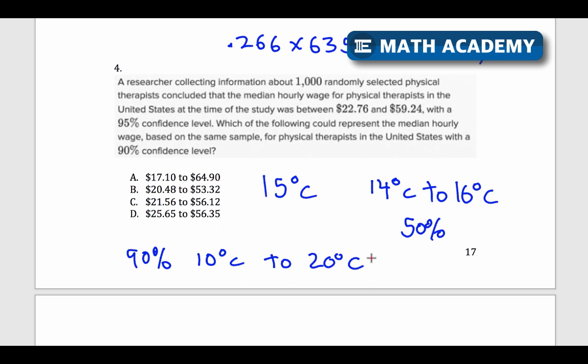That's like saying, hey, we went from 10 degrees to 20 degrees down to 14 to 16 degrees. We're decreasing that interval and we're less confident. So in this answer, I'm going to say that, hey, if they're less confident about it, this interval will decrease. It'll be a smaller interval here. So I'm looking for numbers that are greater than $22 on the shorter end, and then there's smaller than $59 on the larger end, because that would be a smaller interval.